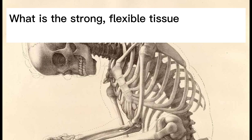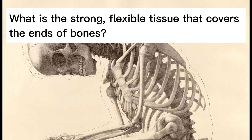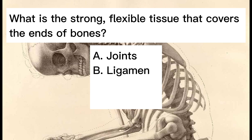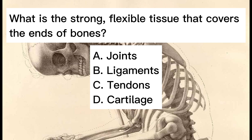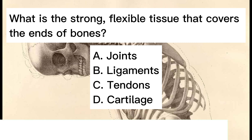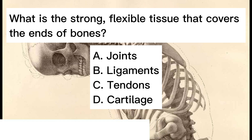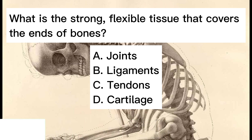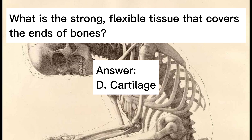What is the strong, flexible tissue that covers the ends of bones? A. Joints. B. Ligaments. C. Tendons. D. Cartilage. Answer: D. Cartilage.